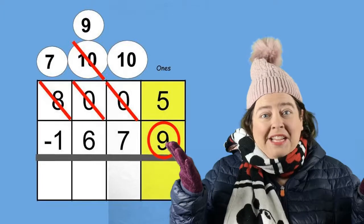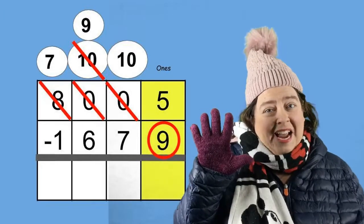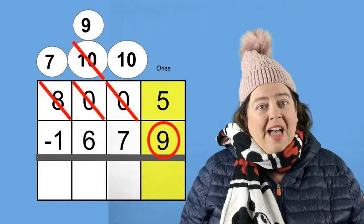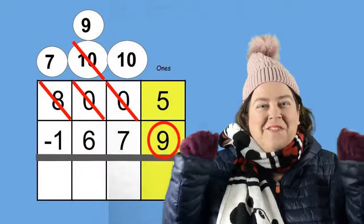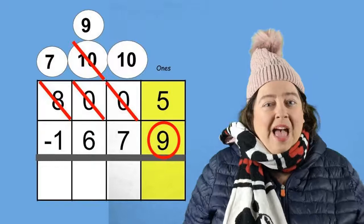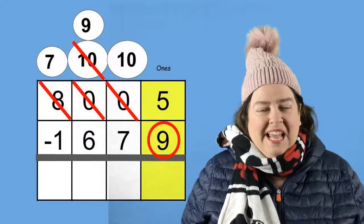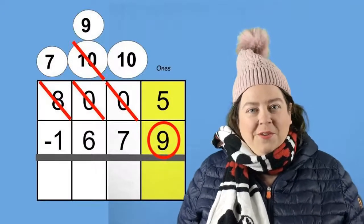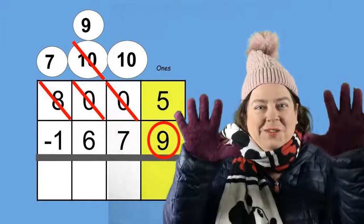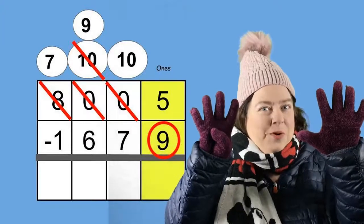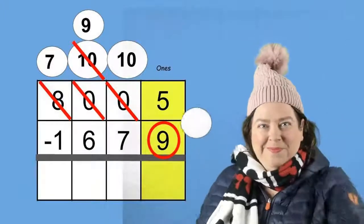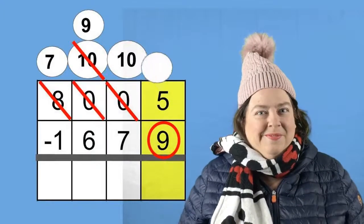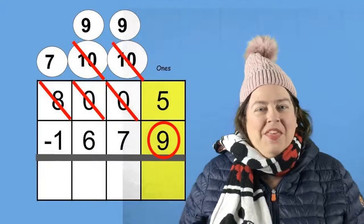But wait! I still can't subtract five minus nine. So now I have to look at my tens place. Hooray! There's some in there now. I have ten tens. And if I take one of those tens away, how many do I have left? Let's throw a snowball and find out. I am now left with nine tens.